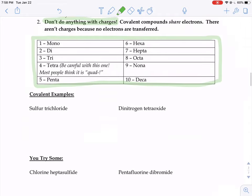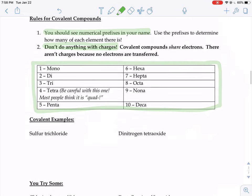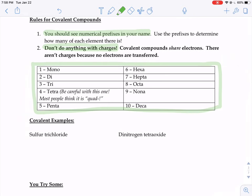So this first example here, sulfur trichloride, that tri is what tells us it's a covalent compound, a numerical prefix. So when you see them, just use what the prefixes are to determine how many there are of each part.